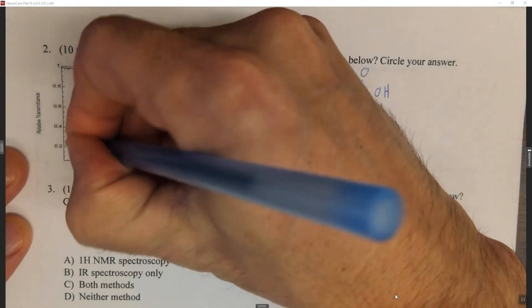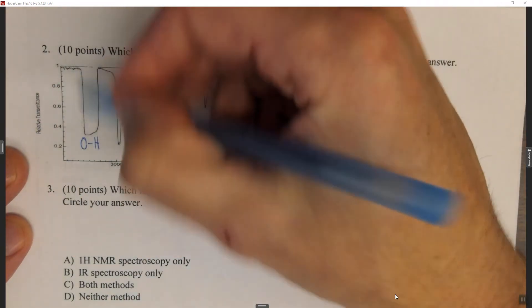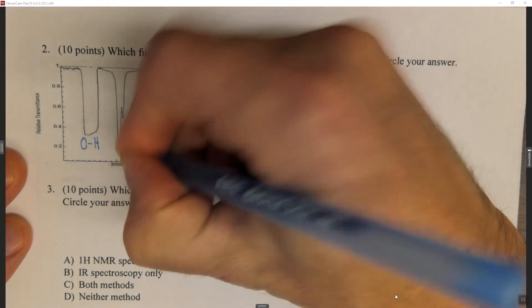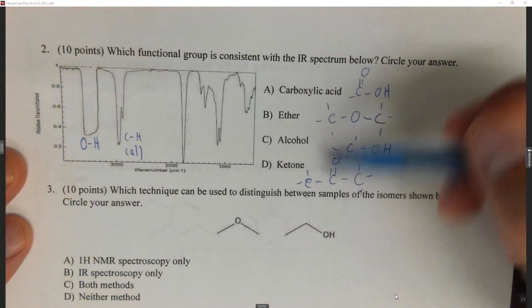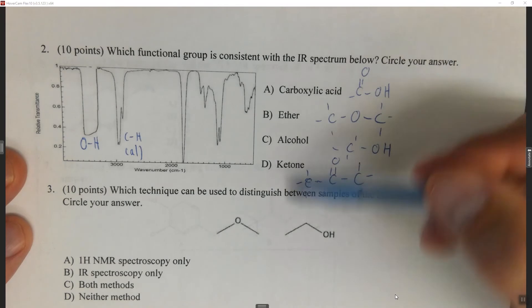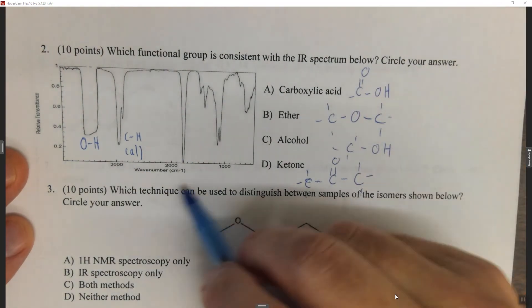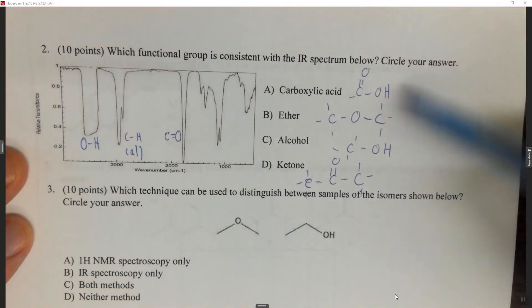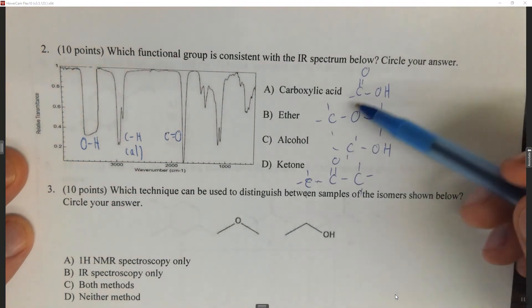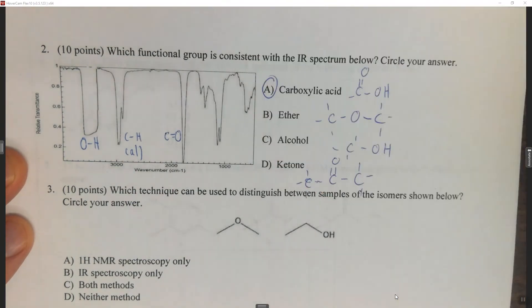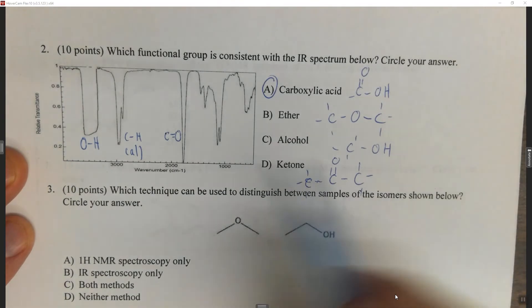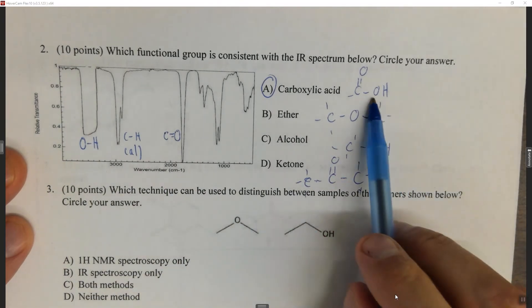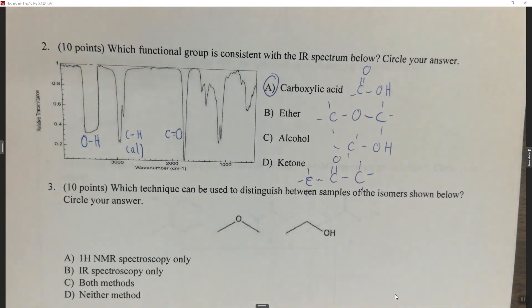Looking at the spectrum, we have a broad peak — this is an OH. We have a CH aliphatic, and we have a C=O. The only functional group that contains both a C=O and an OH is a carboxylic acid. An alcohol would have just the OH peak and a ketone would have just the C=O, but only the carboxylic acid has both.